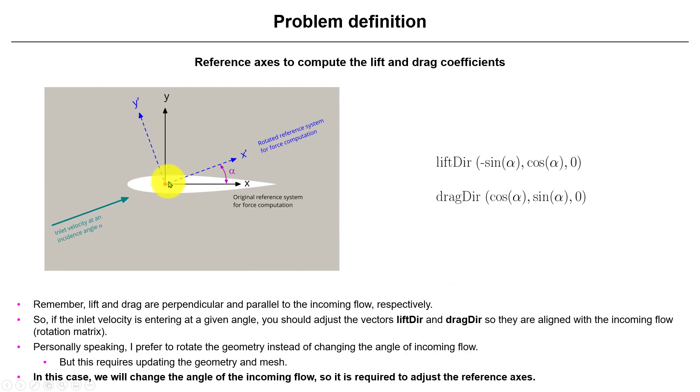What is important is that you need to define your reference axis when computing lift and drag forces and coefficients. If your flow is horizontal and you decide to change the angle of the airfoil, you don't need to do much - just change it and redo the geometry mesh. The other way is changing the angle of the incoming flow. Remember that your drag force and lift forces are: the drag is parallel to the incoming flow and the lift is perpendicular to the incoming flow.